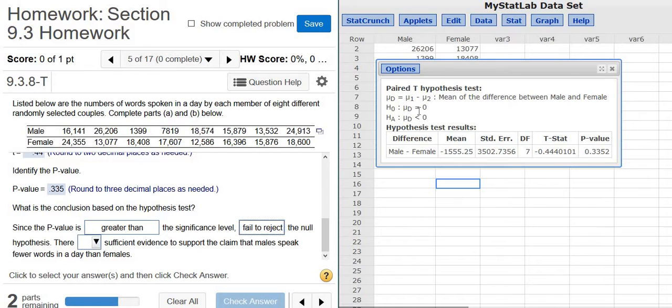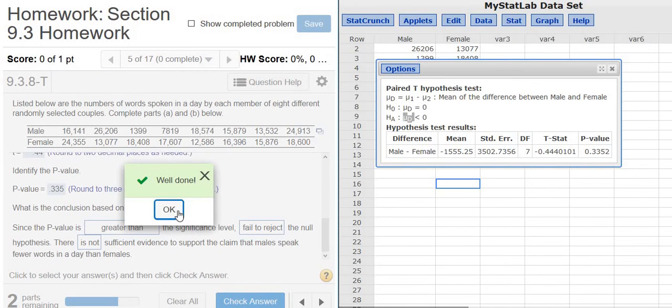And so in this case, if you reject the null hypothesis, there is enough evidence to say that males speak fewer words. If you fail to reject, there is not enough evidence to say that males speak fewer words. So there is not enough evidence to say that males speak fewer words.